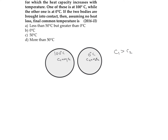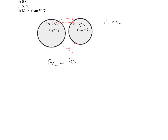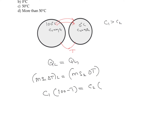If they had the same specific heat, the equilibrium temperature would be 50°C. Now assume the equilibrium temperature is T. Heat energy transfers from the hot body to the cold body, so heat loss equals heat gain: C1·ΔT = C2·ΔT. Writing this out: C1·(100 − T) = C2·(T − 0).